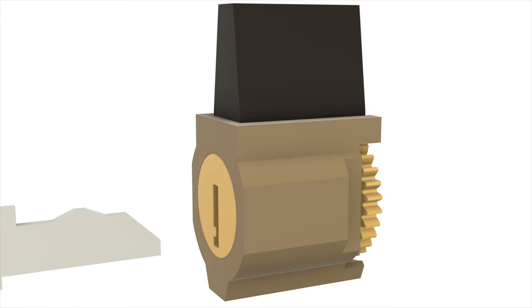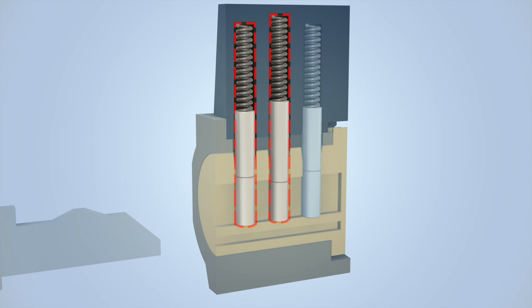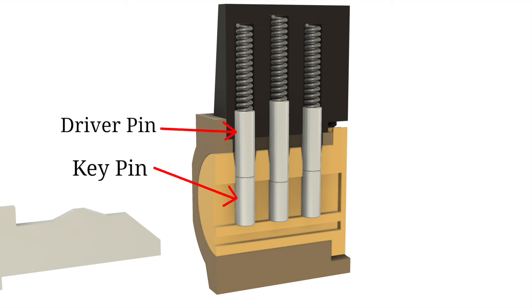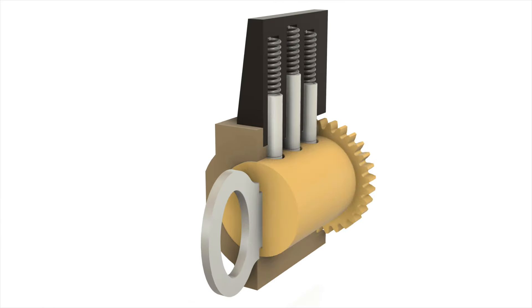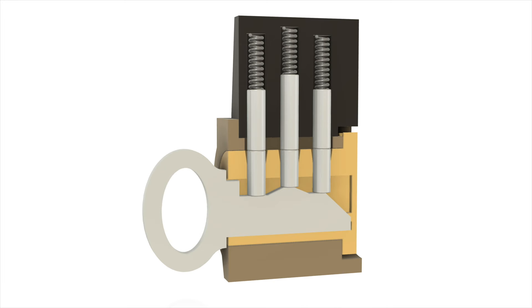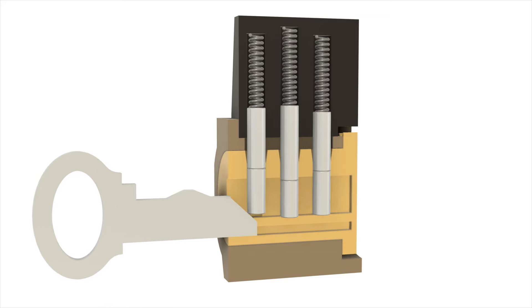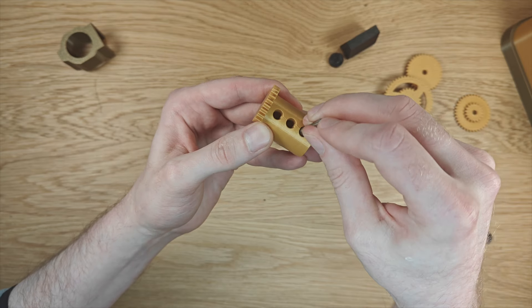Before I assemble the lock I want to take a moment to explain how it works. The lock is composed of three 3D printed pieces: the top case, the bottom case, and the plug. Looking inside there are three shafts that run between the top case and the plug. Within each shaft a spring pushes down on a metal dowel known as a driver pin, which pushes down on another dowel known as a key pin. When we insert the correct key, the pins in each shaft align with the outside face of the plug allowing it to rotate. This is called a pin tumbler lock, although this is an extremely simple version and not super secure.